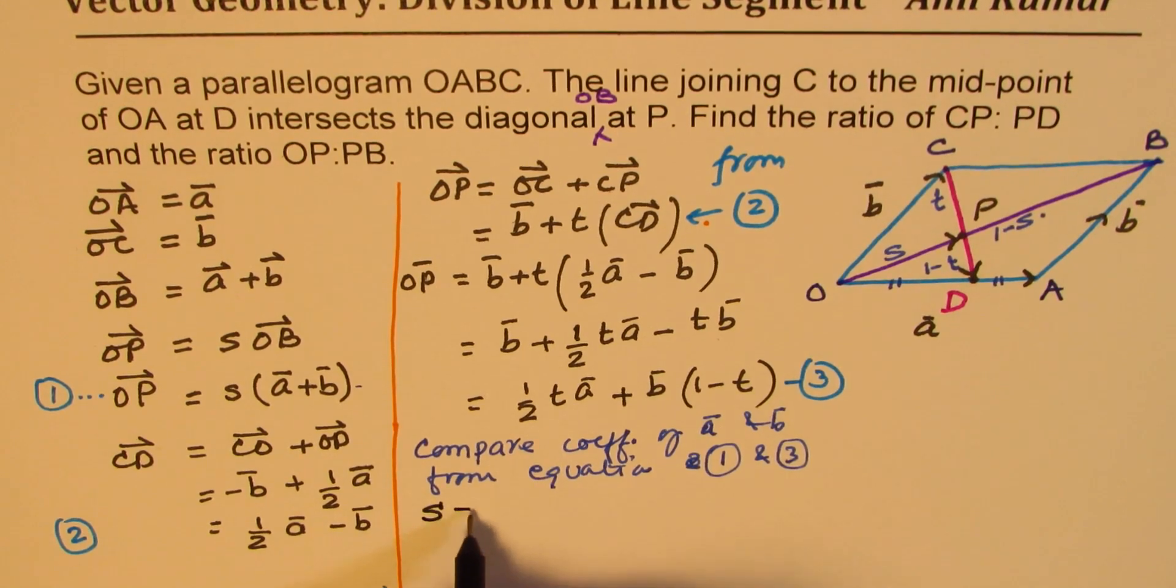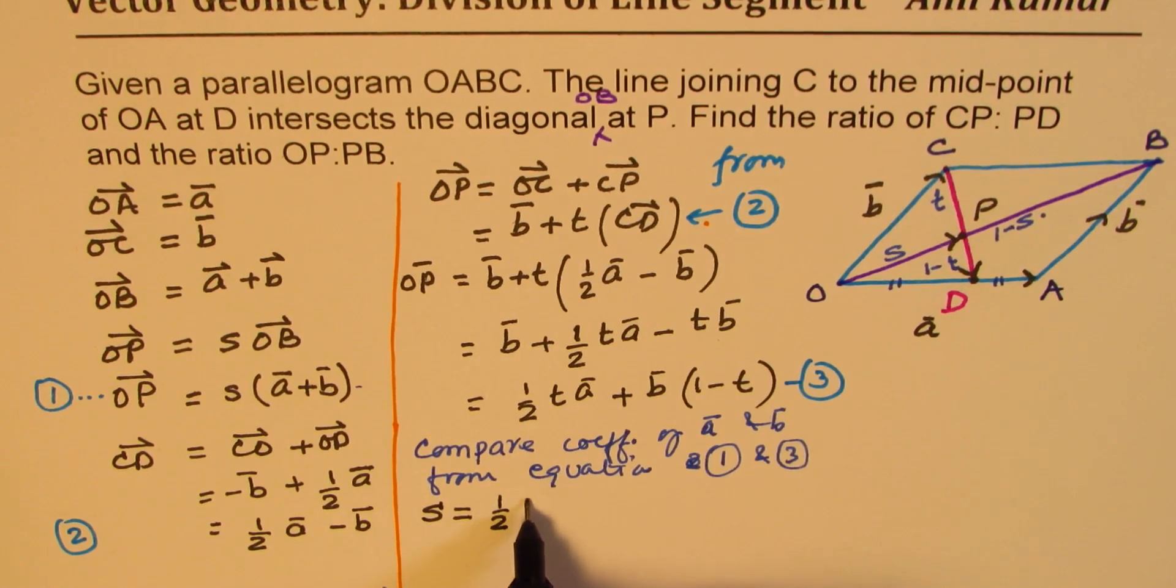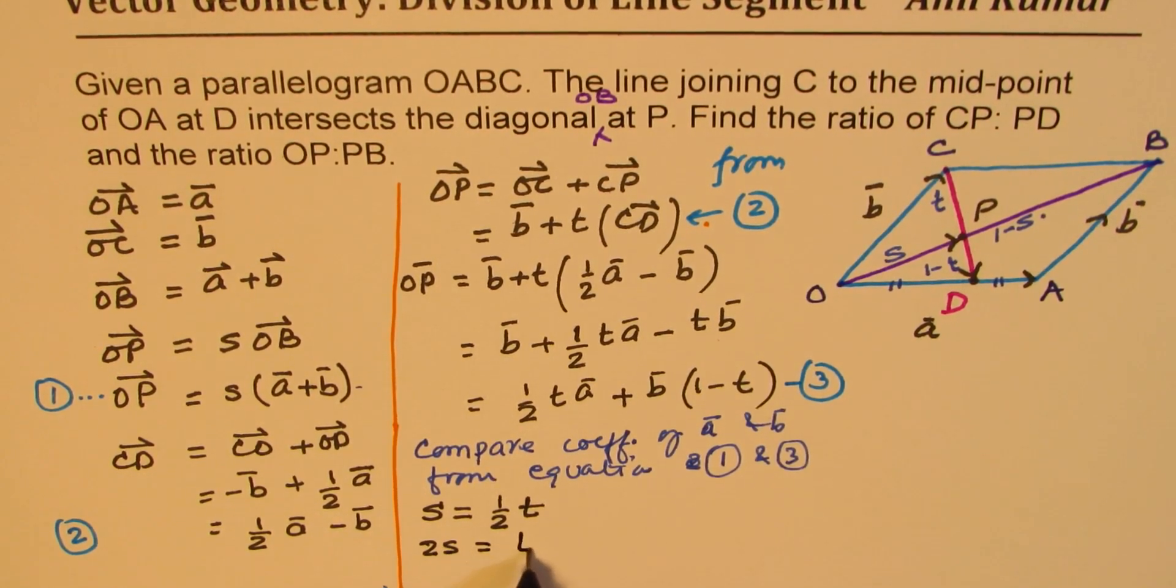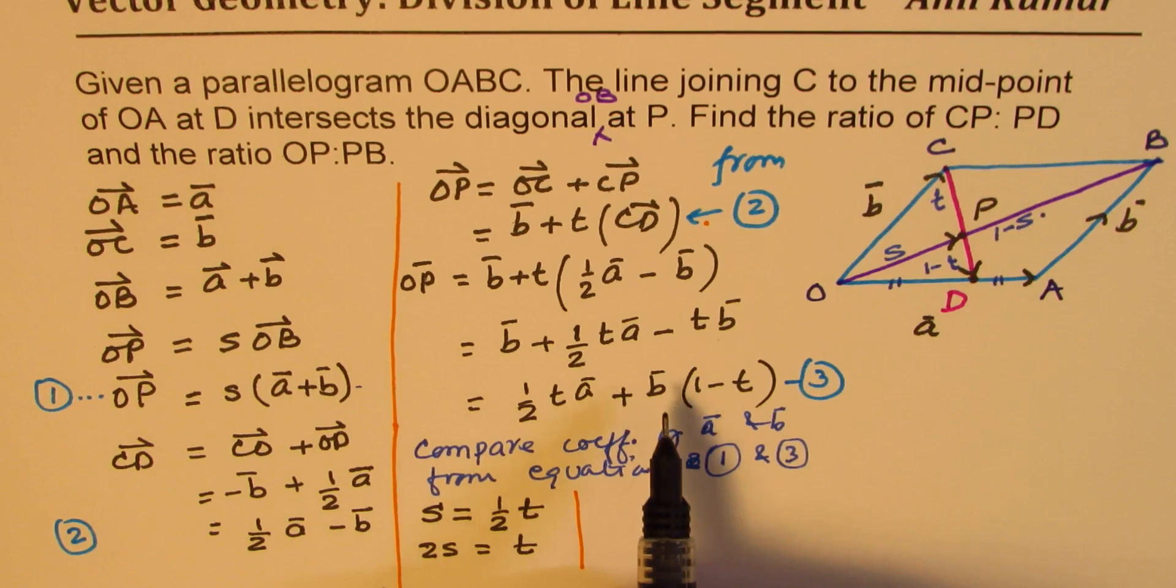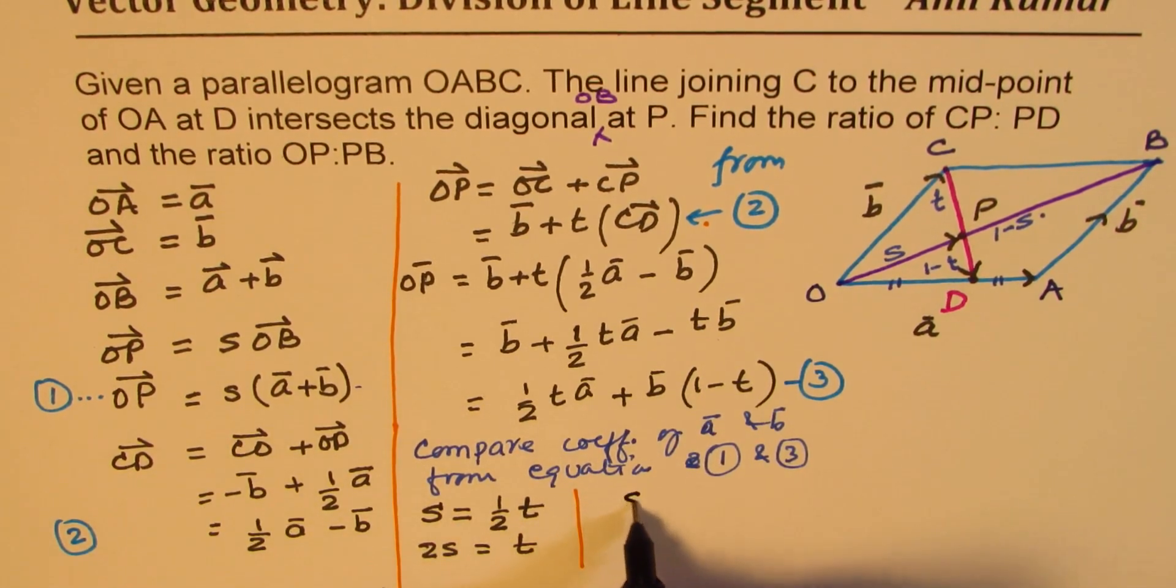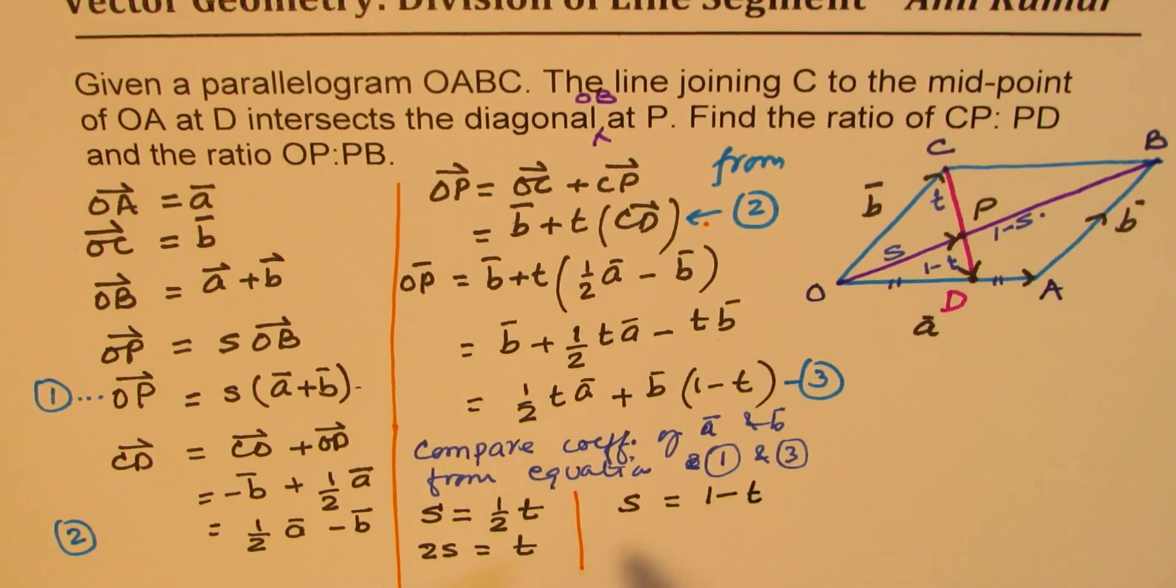So we get 2S equals to T. Comparing the coefficients of B, it is S in equation 1, it is equal to 1 minus T here.